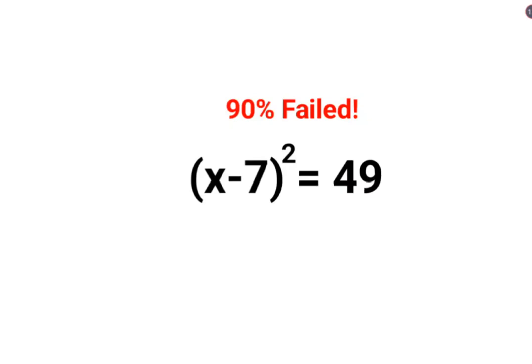Welcome everyone. A lot of people thought that x minus 7, the whole square, is equal to 49. In this case, a lot of people thought that this can be done orally. Literally, people thought that this is basically 7 square.